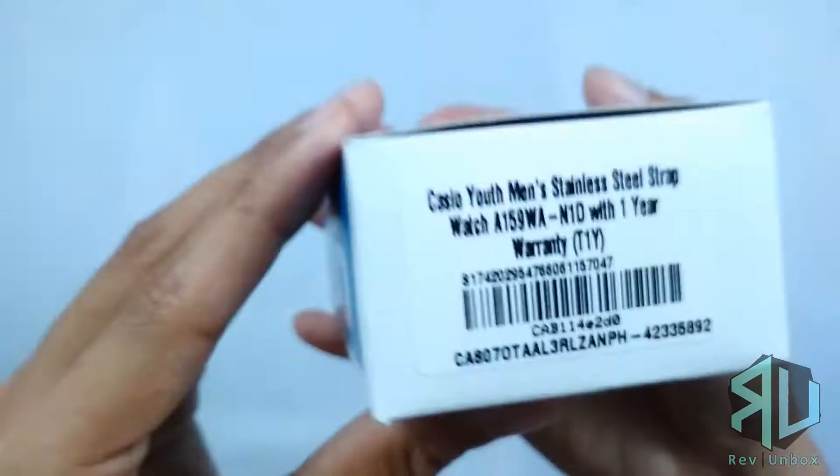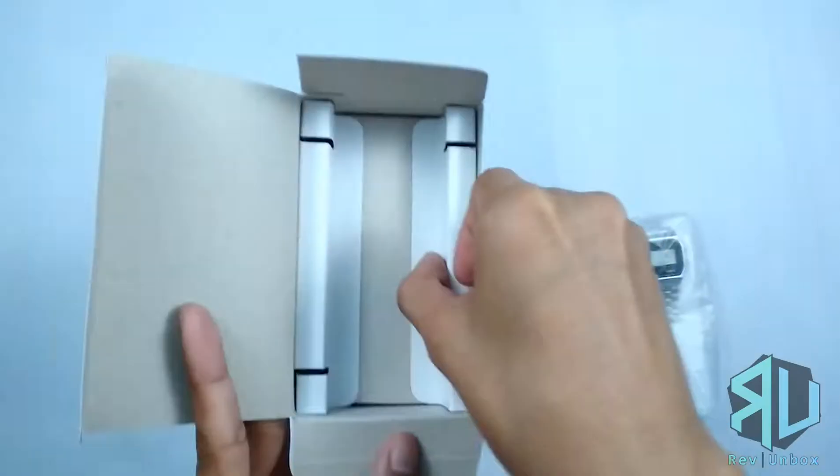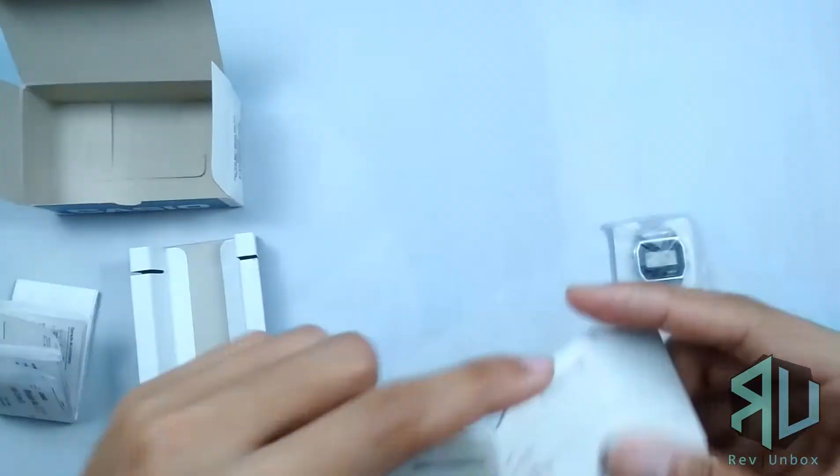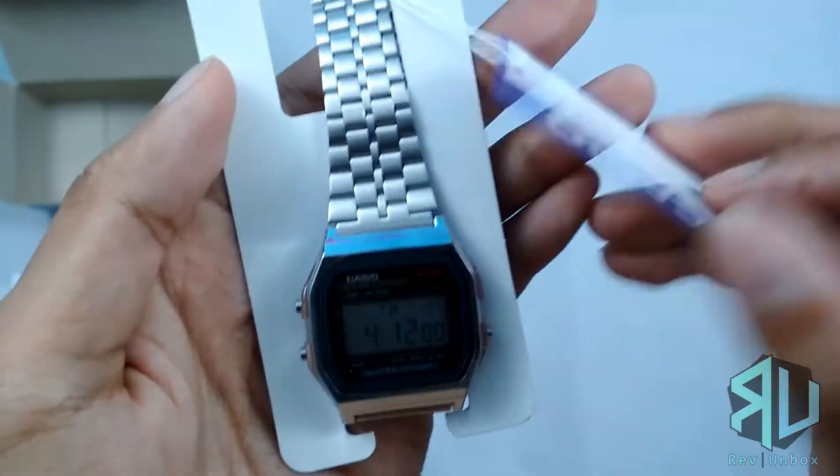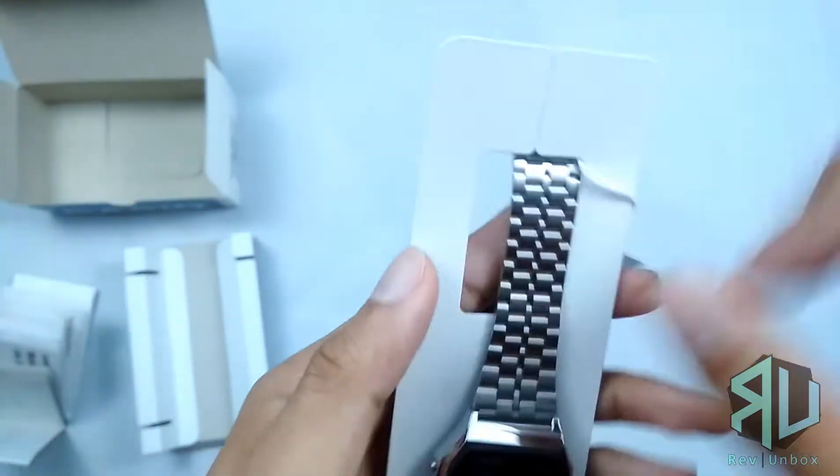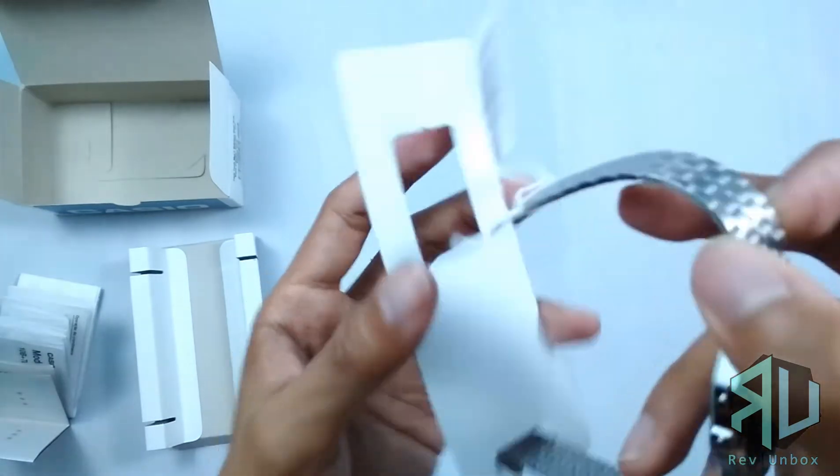This one comes in a smaller box with a different design. But the way things are arranged inside is very much the same. Just like before it comes with a warranty card and a manual. In terms of features it is entirely similar to the other watch.